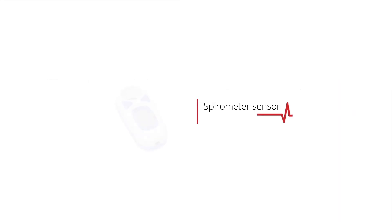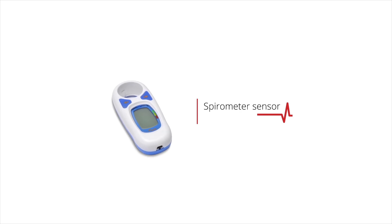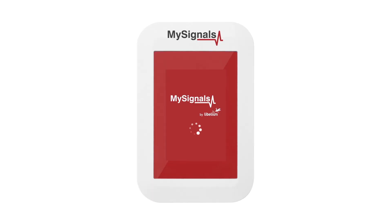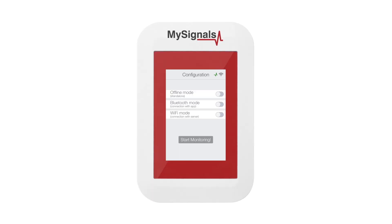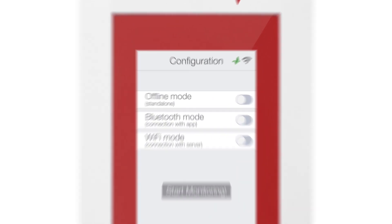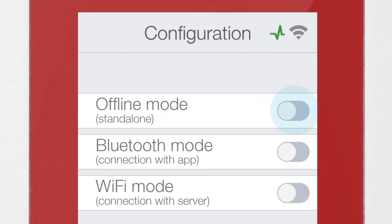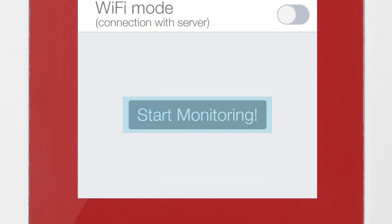How to use the Spirometer sensor in MySignals? First of all, power MySignals. It goes directly to the Configuration menu. Select Offline mode in the menu and click on the Start Monitoring button.